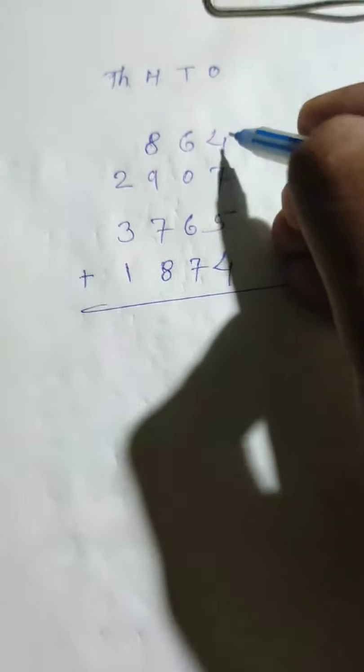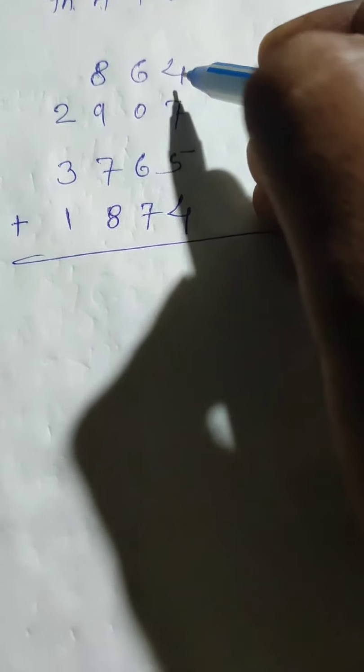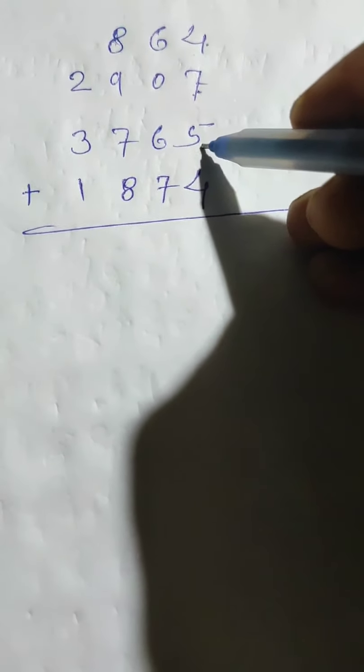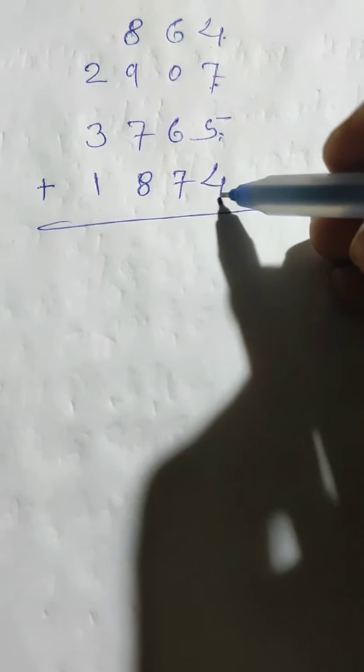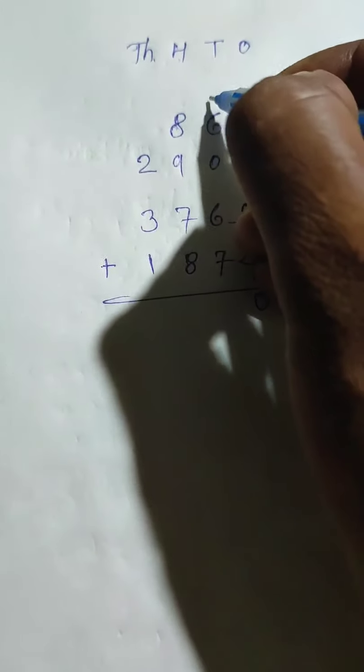First solve the ones place. Four plus seven - first add any two numbers. Four plus seven is eleven, eleven plus five is sixteen, sixteen plus four is twenty. Write zero and carry two to tens place.